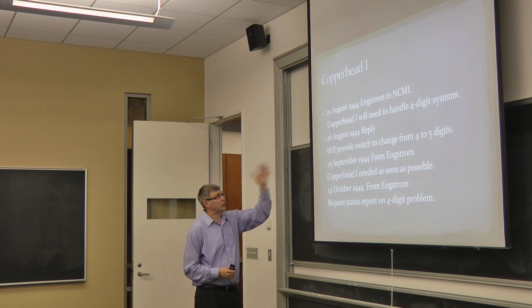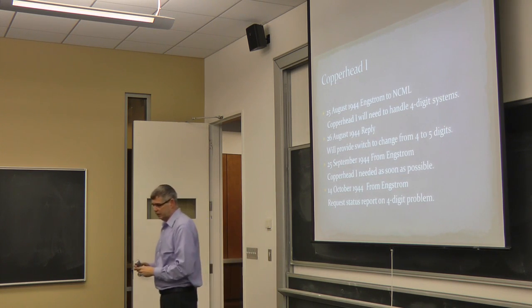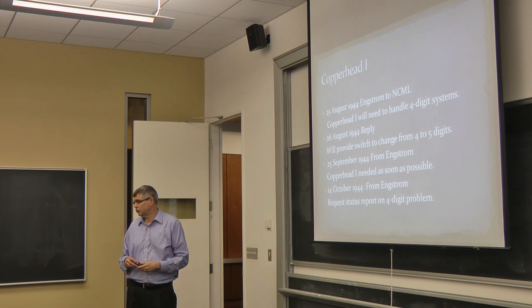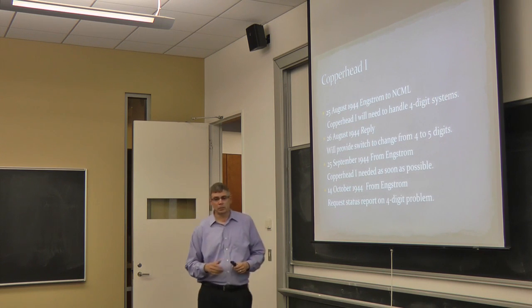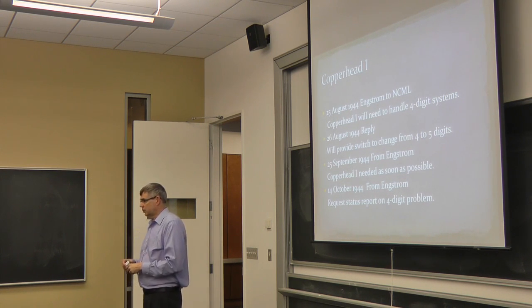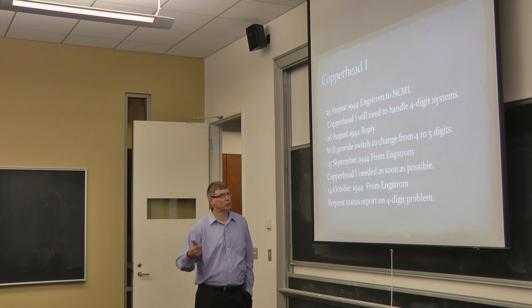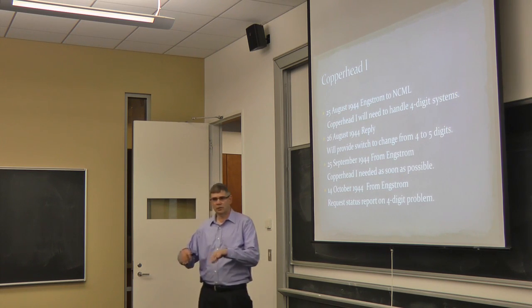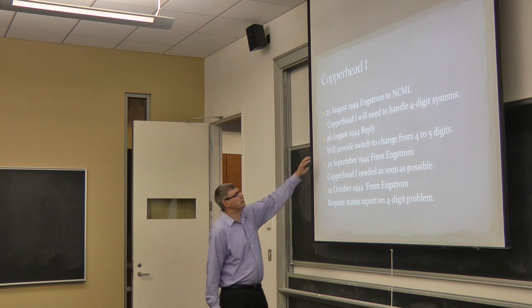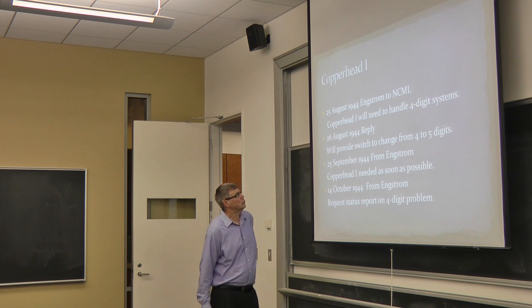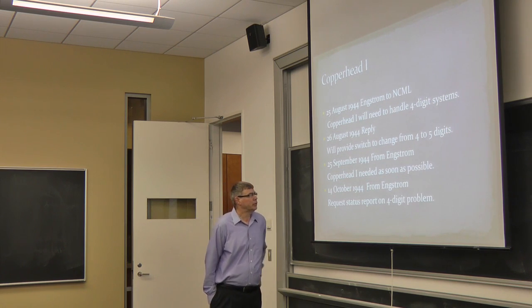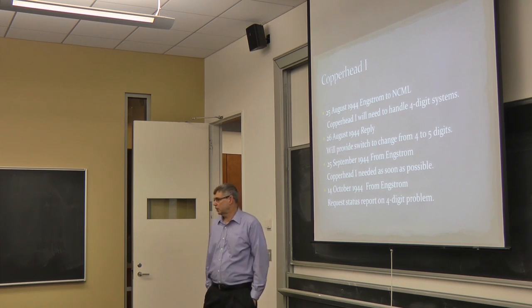There seems to be something interesting going on just before the machines arrived in D.C. though. In August of 1944, Howard Engstrom, who was the director of the Mathematicians, the G-M section at OP-20-G, wrote to Dayton and said that they needed Copperhead 1 to be able to handle four-digit systems. Now JN-25 was a five-digit system, but JN-11 was a very similar system but was four digits. It was used by the merchant marine and therefore by convoys. Dayton replied back immediately that they would just provide a switch to change from four to five digits. Now today that might be just a few lines of code. Here they've got a machine built. It's got gears, it's hardwired, it's got electronic stuff. It didn't happen quite as quickly as they thought. 25th of September, Engstrom is saying they need it as soon as possible. And 14th of October, they're still trying to apparently fix the four-digit problem.